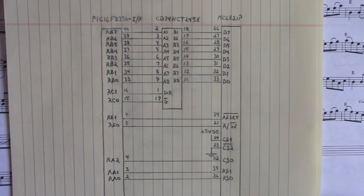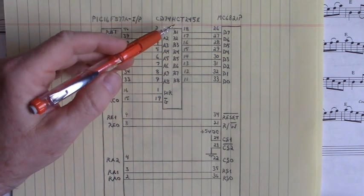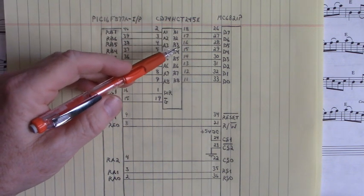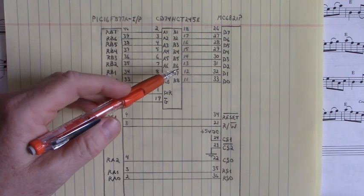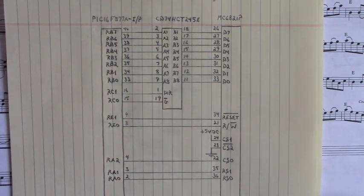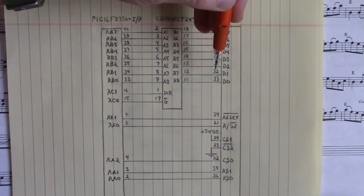The B side of the 74HCT245, pins 18, 17, 16, 15, 14, 13, 12, and 11, is connected to pins 26, 27, 28, 29, 30, 31, 32, and 33.